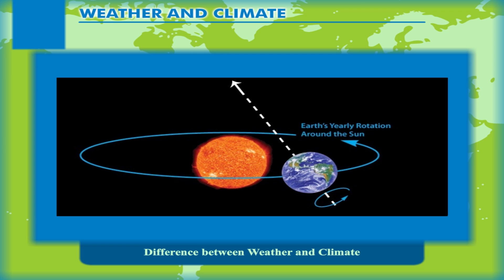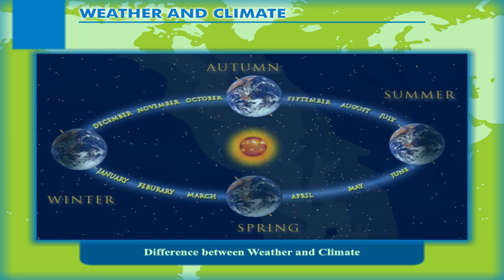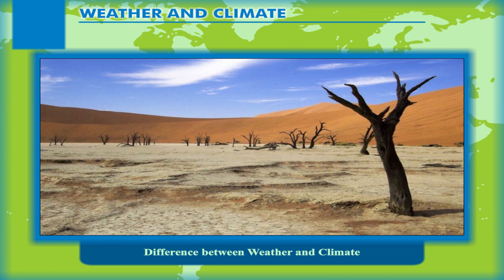The position of the earth with reference to the sun changes during the earth's revolution around the sun. This gives rise to four divisions of the year due to varying temperature conditions and related phenomena. Every place experiences almost similar seasonal variations every year and year after year.